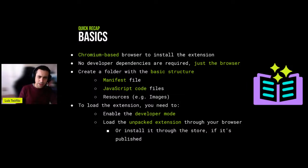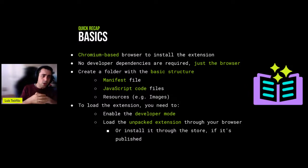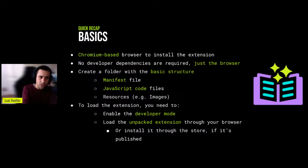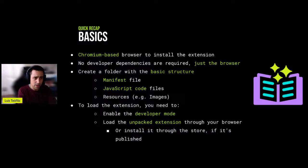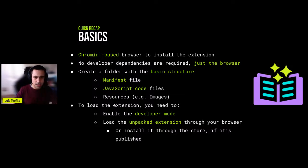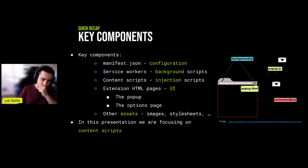The manifest file is kind of the configuration of the extension. When you load an extension, you search for a folder that has a manifest file in the right format. In that folder there will be JavaScript code files and potentially resources like images, icons, and other assets.